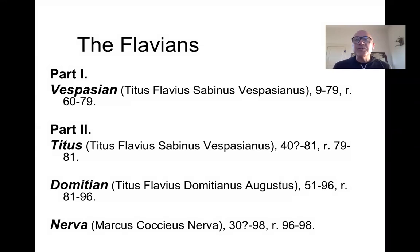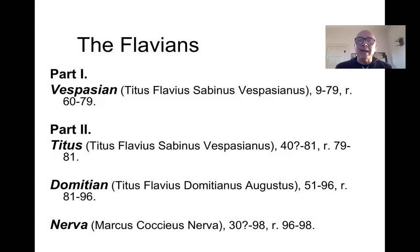The Flavians followed the Julio-Claudians — that is the descendants of Augustus, Caesar Augustus — on the imperial throne. The first emperor of the Flavian clan was a man by the name of Vespasian, a very important and long-serving emperor. In part two of this series we will look at the descendants: his son Titus, and then the successive heirs Domitian and Nerva. So let's begin by talking about the Flavians.